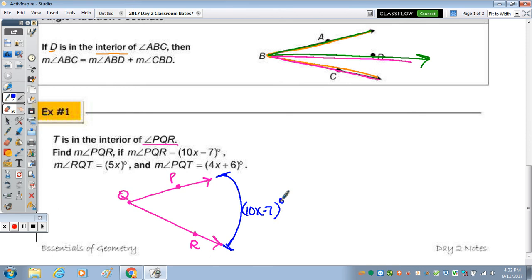Oh, I forgot to put T in the interior. So let's say T is right here. So if RQT is 5X, so RQT, so from here to here is 5X. And then PQT, so from here to here is 4X plus 6. So once again, the sum of the parts, the parts being this orange angle and green angle. So the sum of those two, which would be 4X plus 6 plus 5X equals the whole 10X minus 7.